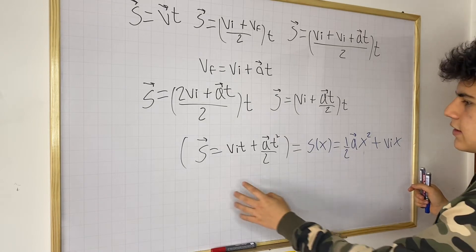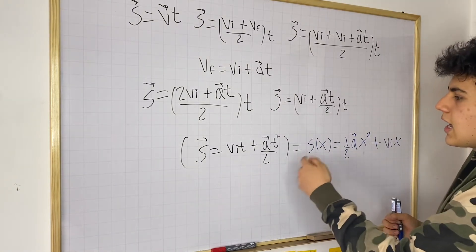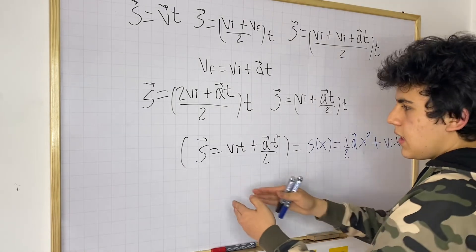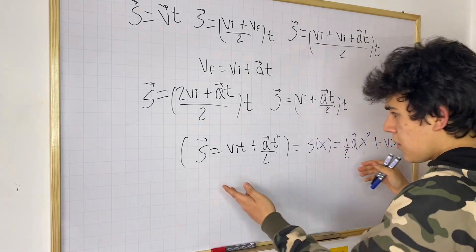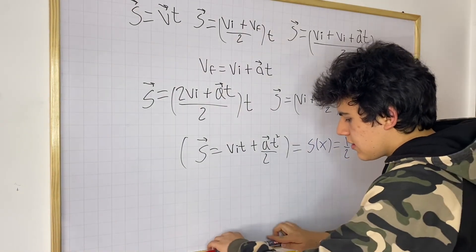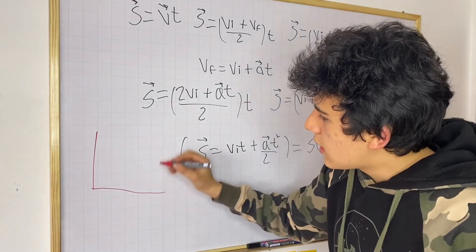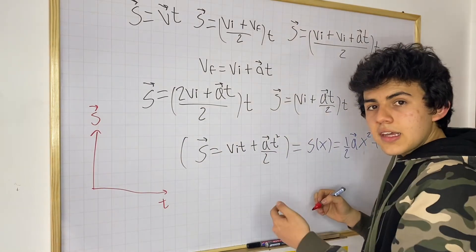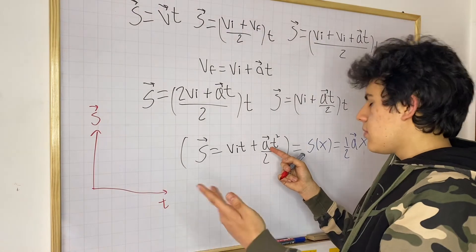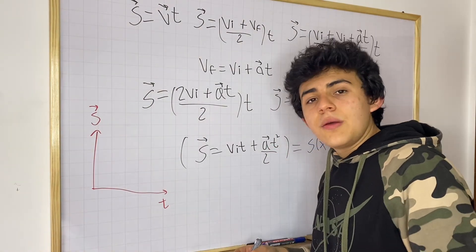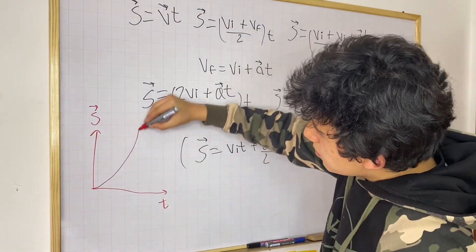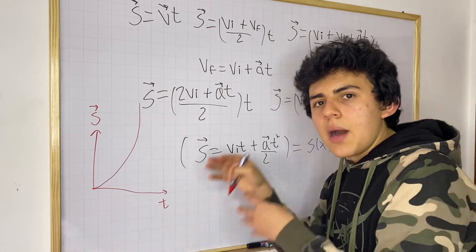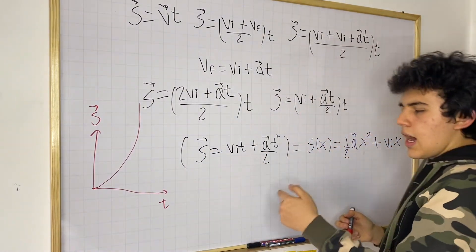Basically, displacement is a function of time, where time is the changing variable, and it forms a quadratic equation — this gives a parabola in the positive quadrant. That makes sense: if we plot displacement on the vertical axis and time on the horizontal axis, with constant positive acceleration the velocity keeps increasing, so displacement looks like half a parabola, going up and up in a shorter and shorter amount of time.